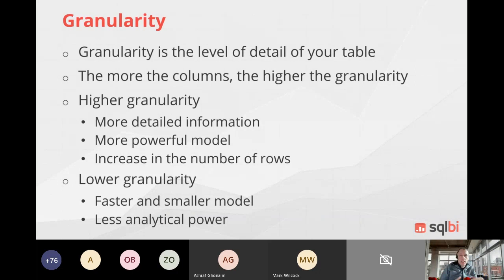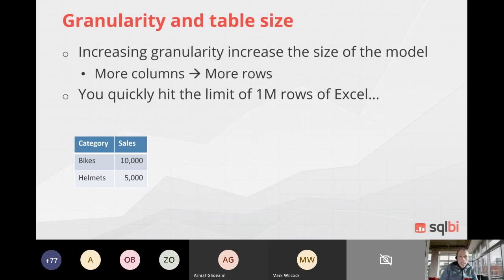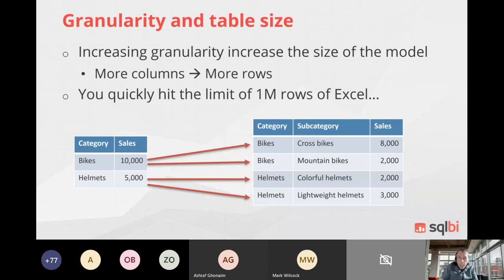A high granularity means a bigger number of rows, more detail, more analytical capabilities, but requires more memory and system capacity. A lower granularity means fewer rows, but that reduces analytical capability because we reduce the number of attributes we can analyze. Power BI doesn't have the limitation we have in Excel - we are not limited to one million rows.